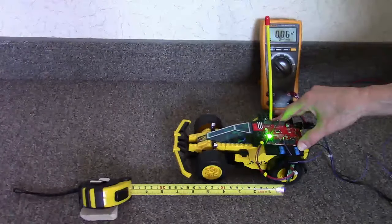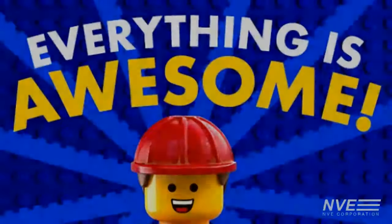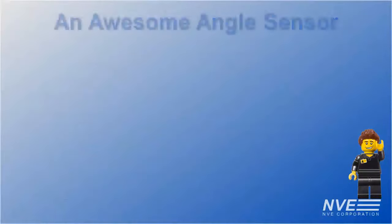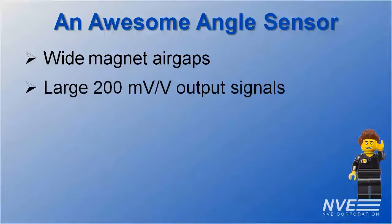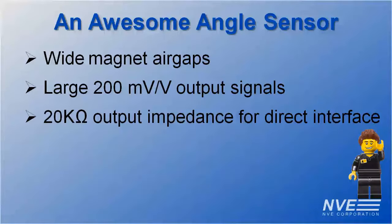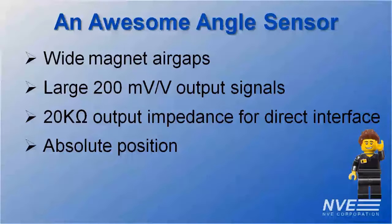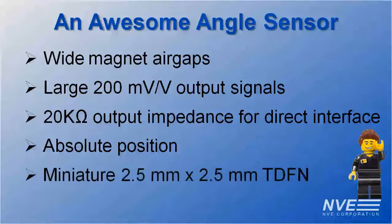So we've shown why AAT sensors are awesome. Wide magnet air gaps for simple positioning, large output signals and low output impedance for direct interface to microcontrollers like Arduinos, absolute position sensing, and small size.